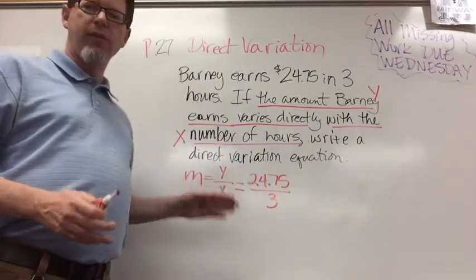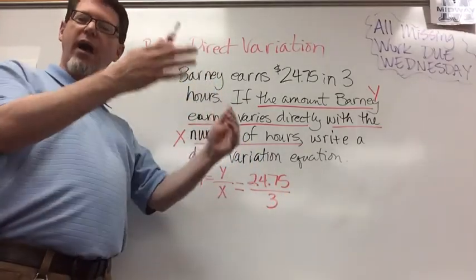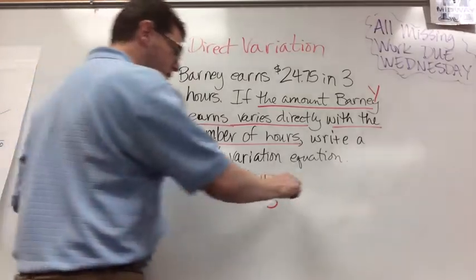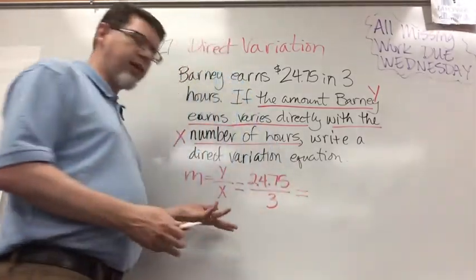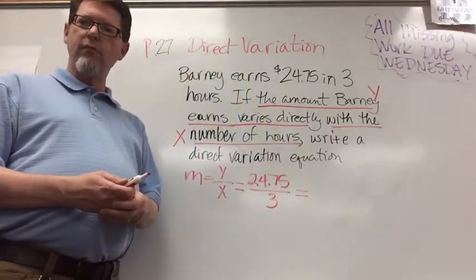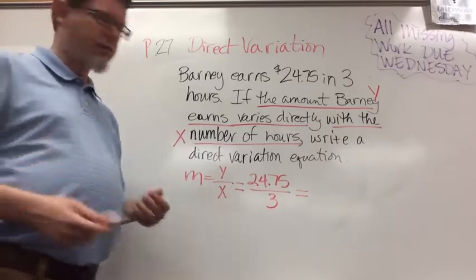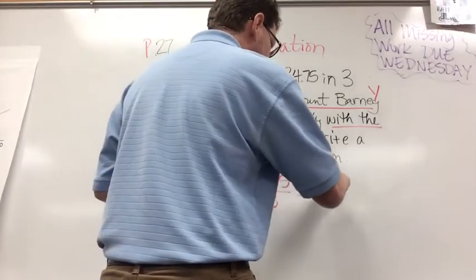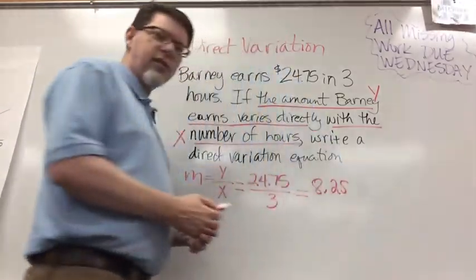Now what is $24.75 divided by 3? Exactly. $8.25. So my slope is $8.25.